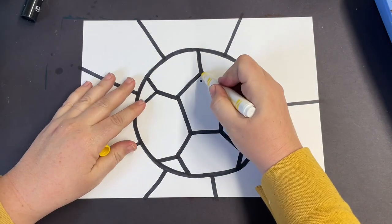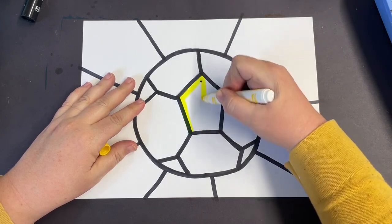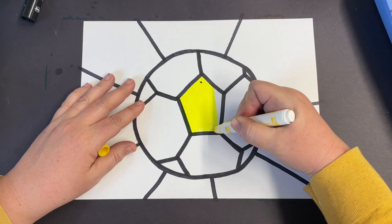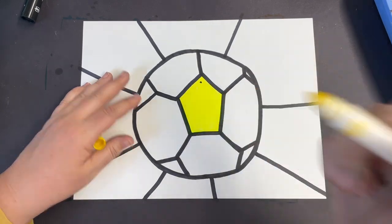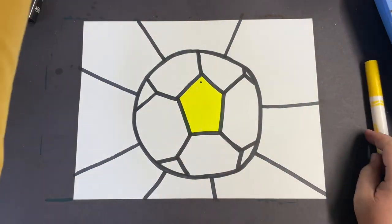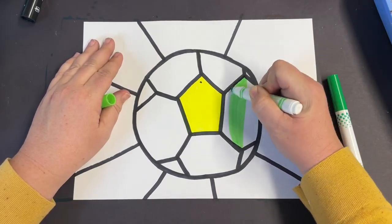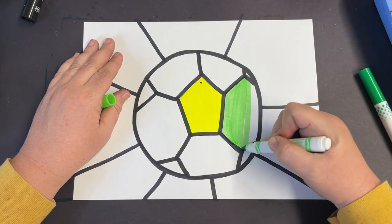After that, we're going to start to think about color. Romero Brito is known for his bright colors and his bold patterns. So I'm going to fill in each one of these sections with its own color. And some of them, I might even create some patterns inside.